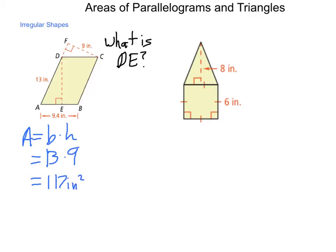Then going back we could also say that the area is a different base and height. So this 117 square inches is equal to our base of 9.4 and the height which is line segment DE. So dividing this we would come up with the length of DE being approximately equal to 12.4 inches.